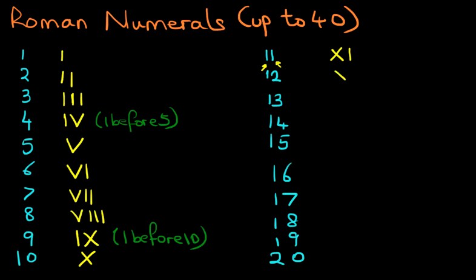12, we do X, I, I. That's 10, 11, 12. 13 is X with 3 I's. Now do you notice a pattern here? Each of these is exactly the same. The only difference is that the tens have got an X before them.